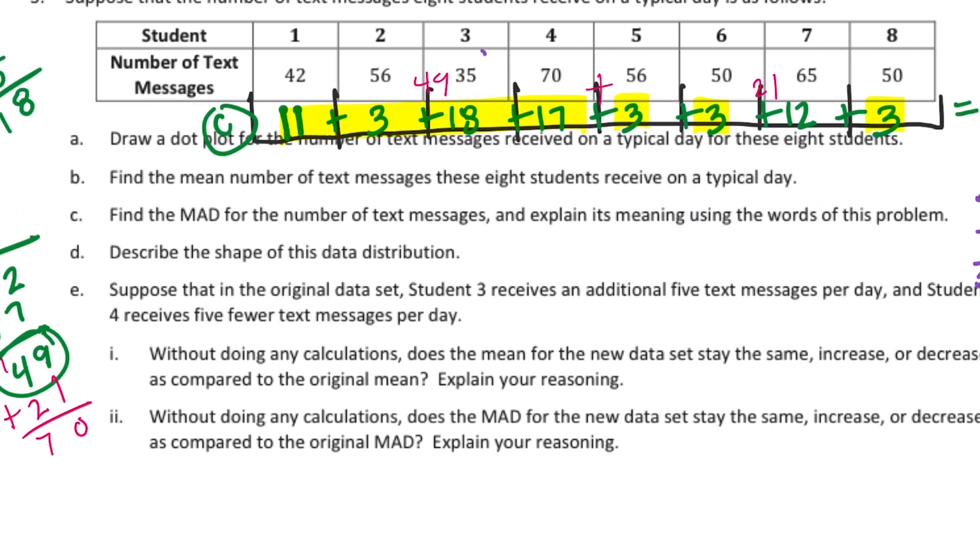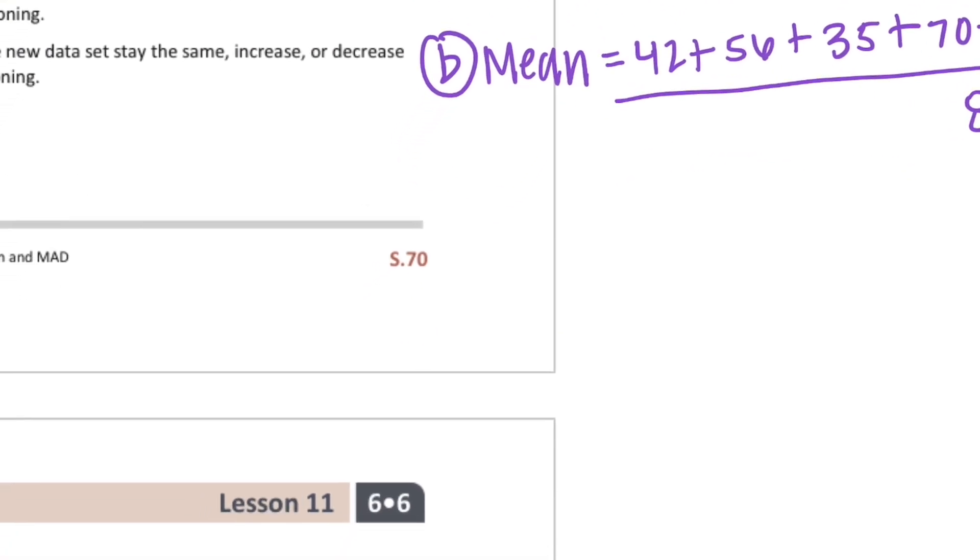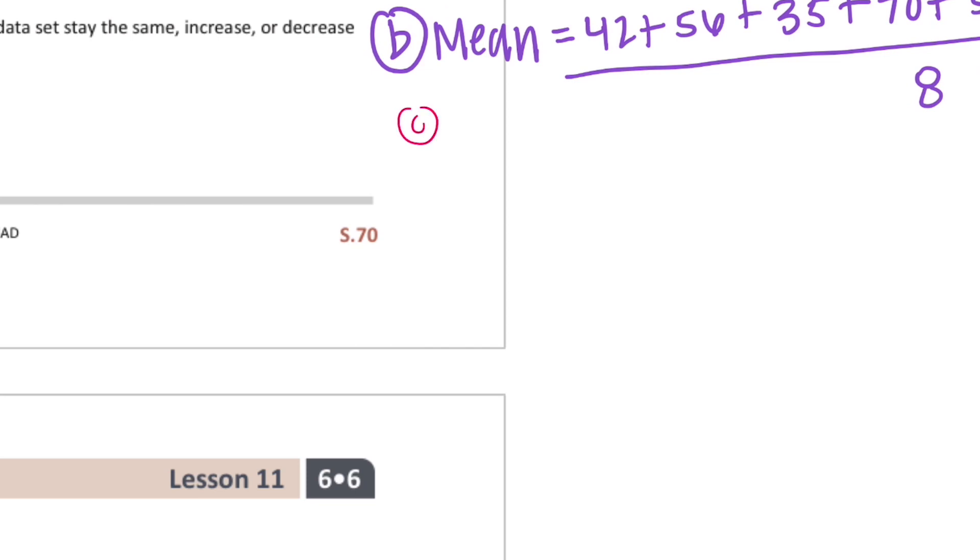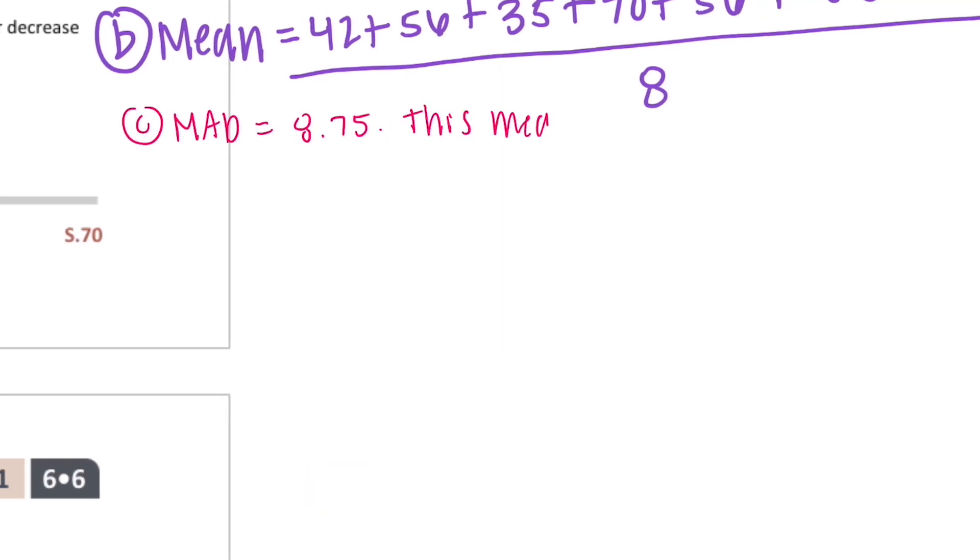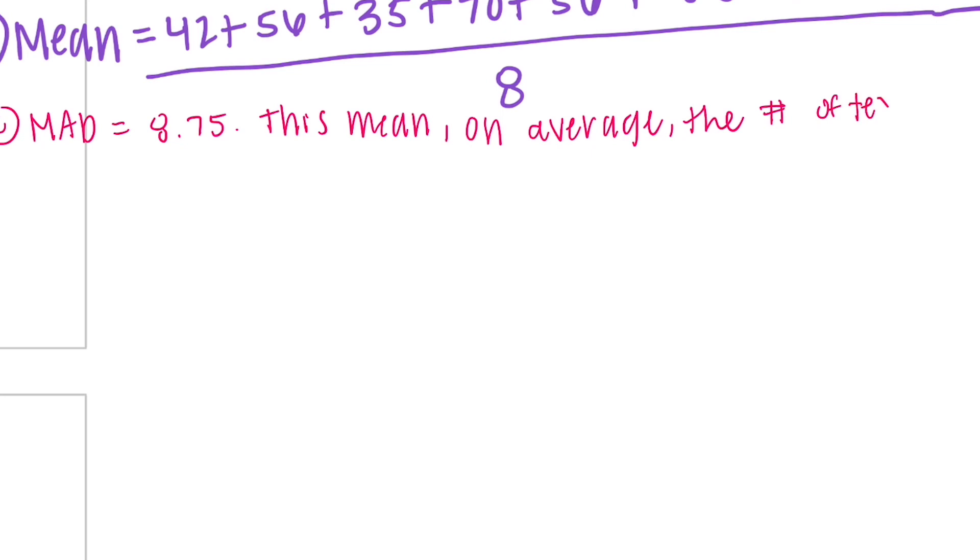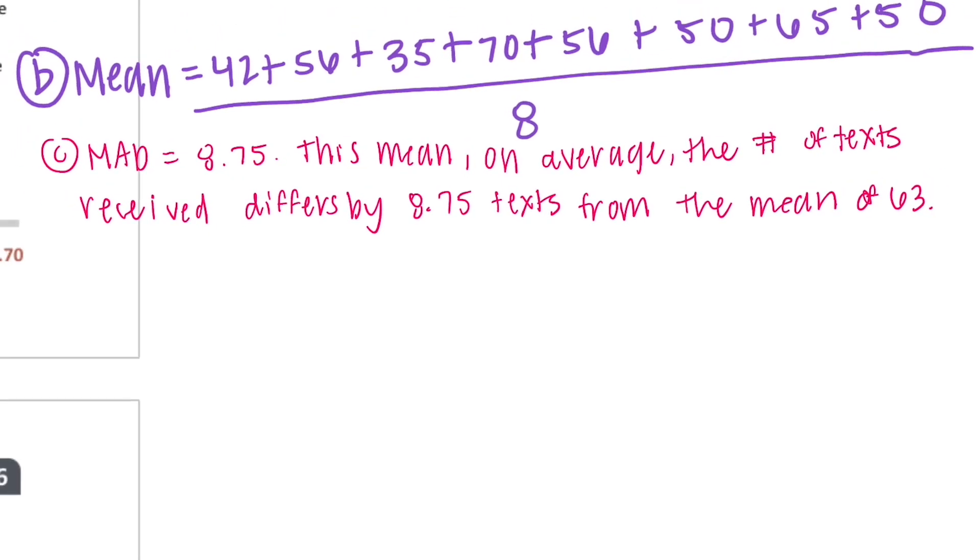Find the MAD and explain the number of text messages using its meaning. So let's explain that this means. 8.75. This means, on average, the number of texts received differs by 8 and 75 hundredths texts from the mean of 53. So on average, the student will be about 8 and 75 hundredths away from 53.